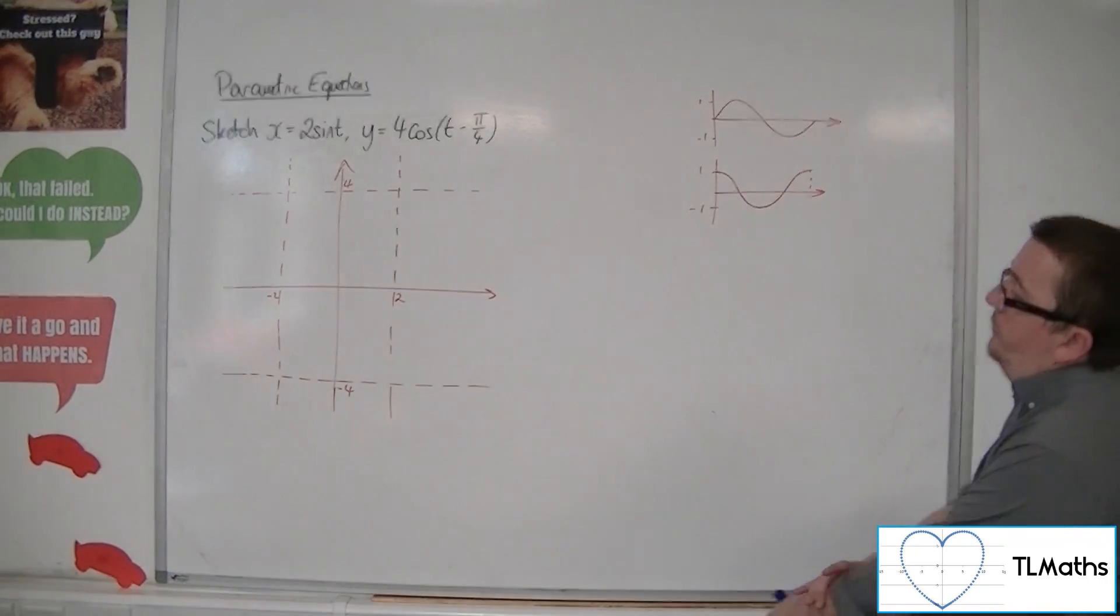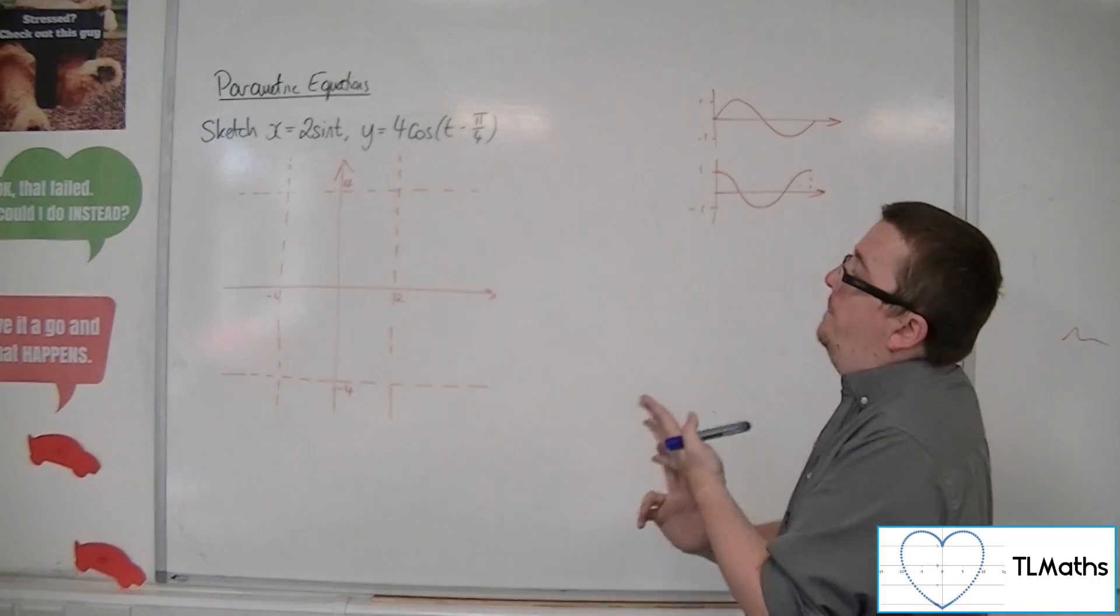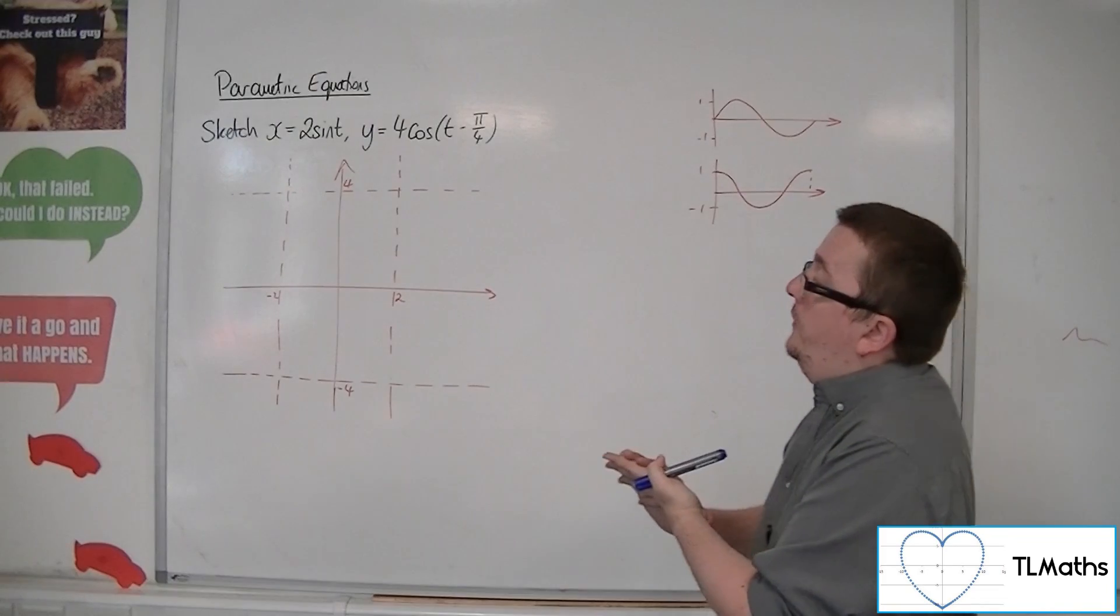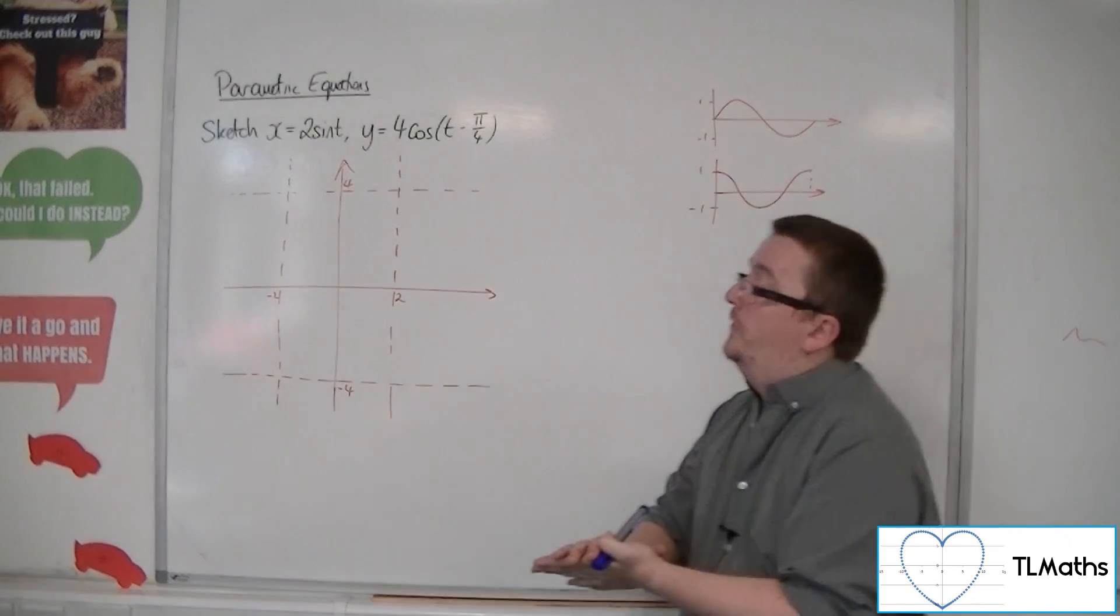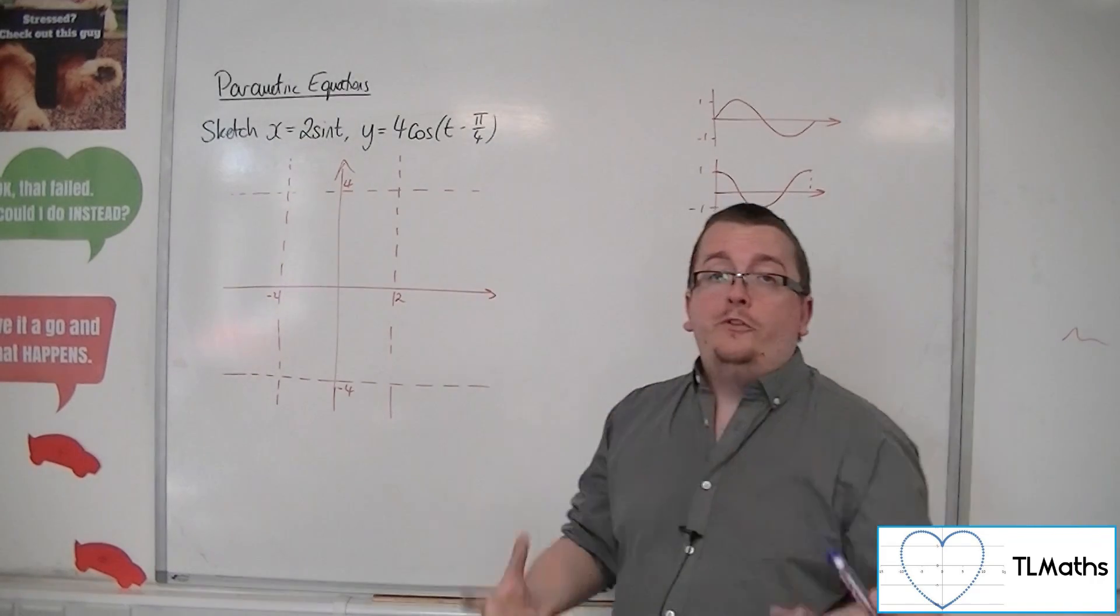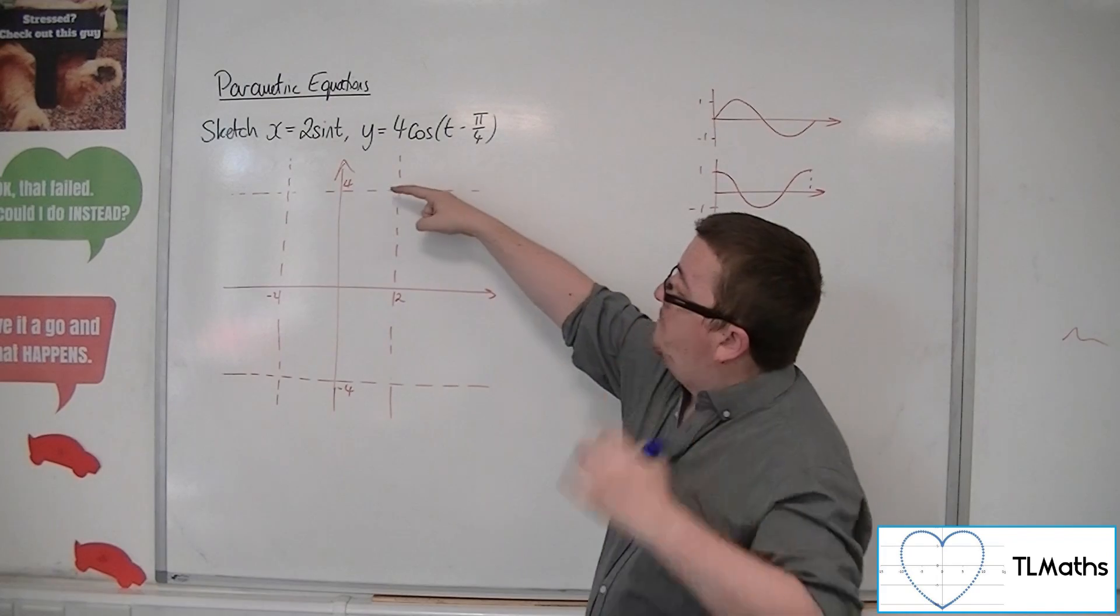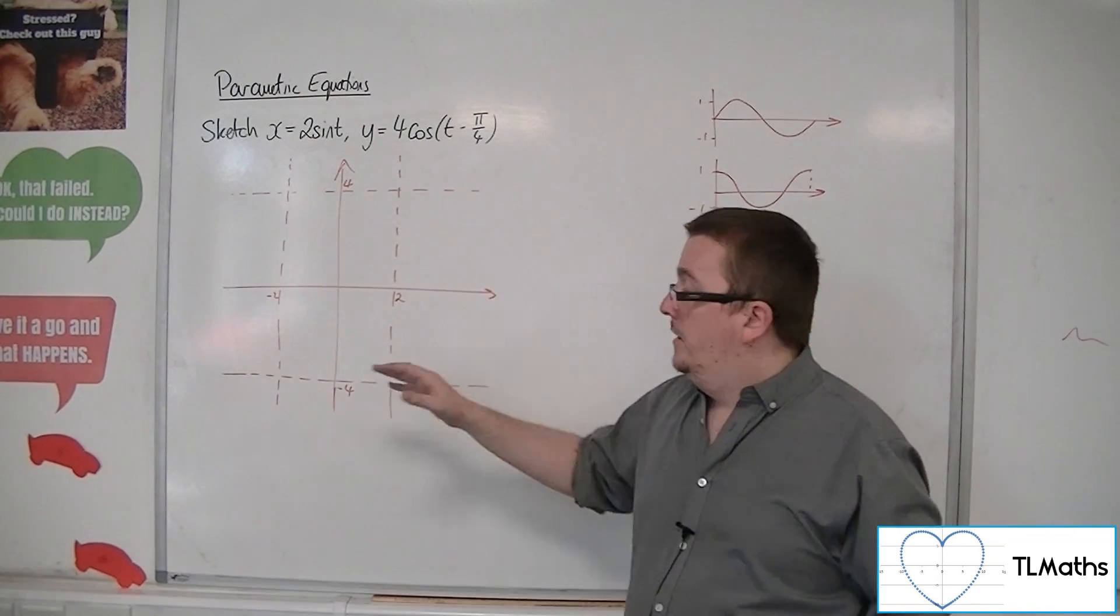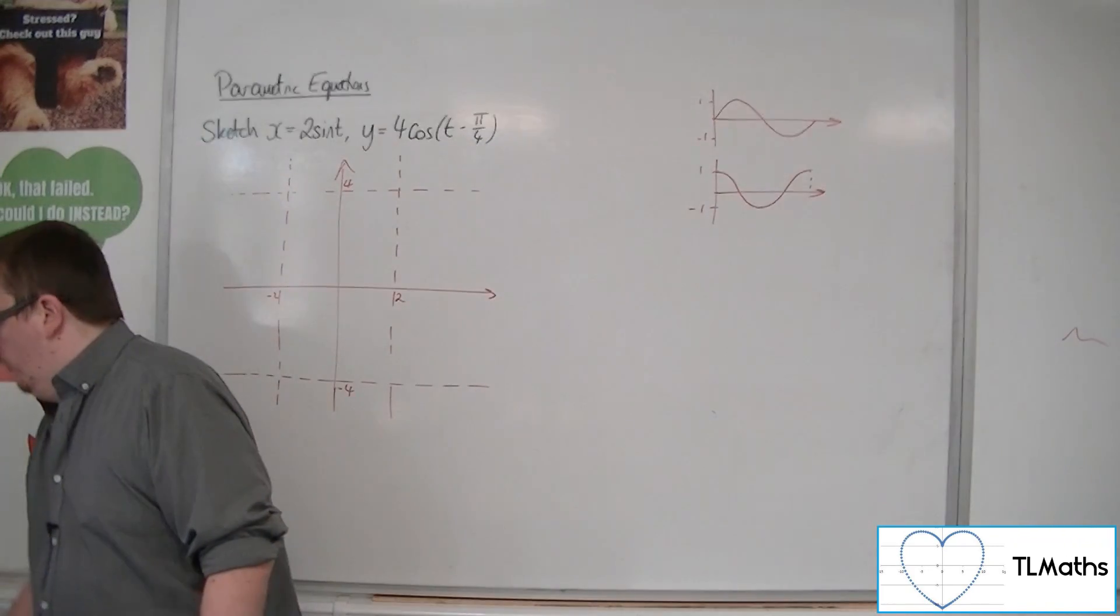And what we want to do is to really find some important points of where it crosses the x-axis, where does it cross the y-axis, and where are those endpoints. Because I know that there are going to be these maximum points where it hits the top and side, bottom and left-hand side of this box. So it would be useful to find those as well.